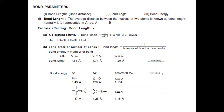Bond parameters. First: bond length, also known as bond distance — the average distance between the nuclei of two atoms, normally represented in Angstrom units. Factors affecting bond length: electronegativity — bond length is inversely proportional to electronegativity difference, while bond energy is directly proportional to electronegativity. Hence the order of bond length: HF < HCl < HBr < HI.